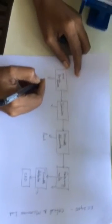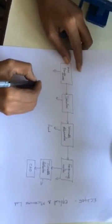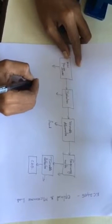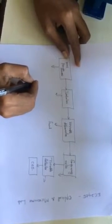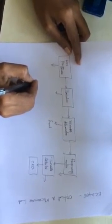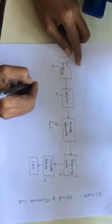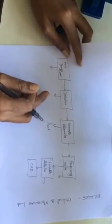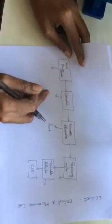In the Gunn power supply, the gun bias should be in the minimum position. The amplitude and frequency knobs should be in the middle position before switching on the power supply. After switching on the power supply, the gun bias is adjusted until we get the maximum output on the CRO.